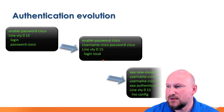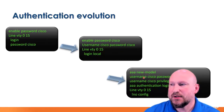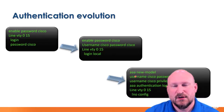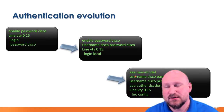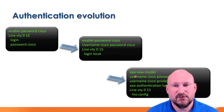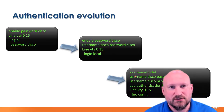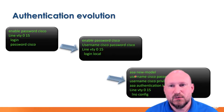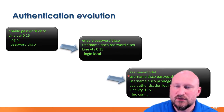That's your stepping stone to where we are now: the AAA new model. The new model decouples things into three functions — Authentication, Authorization, and Accounting. Just because you're authenticated to a device doesn't mean you can do things on it; that's where authorization comes in. Accounting records what you're doing on the device. These are configured with specific AAA commands.